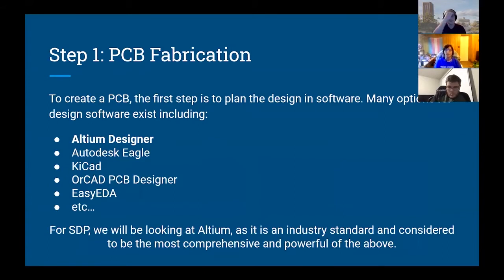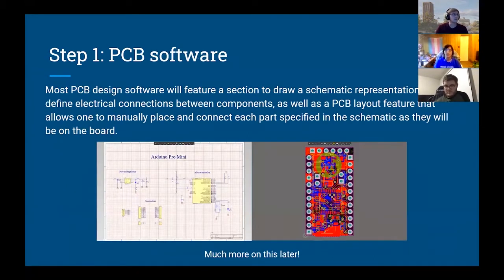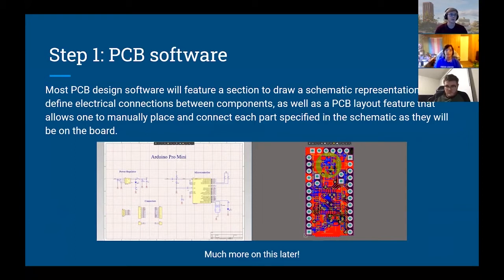The first step in creating a PCB is to design it. There are a couple of different software options; we require Altium for senior design projects, though you should be aware of alternatives like Eagle or KiCad. When you use one of these tools, you'll typically see at least two editors. On the left is the schematic editor in Altium, where you define what components you're using and how they're electrically connected — it's not a physical representation of the board. On the right is the PCB editor, where you plan out the physical board and route traces. The software can then verify you're doing it correctly. We'll cover both editors in the next couple of videos.